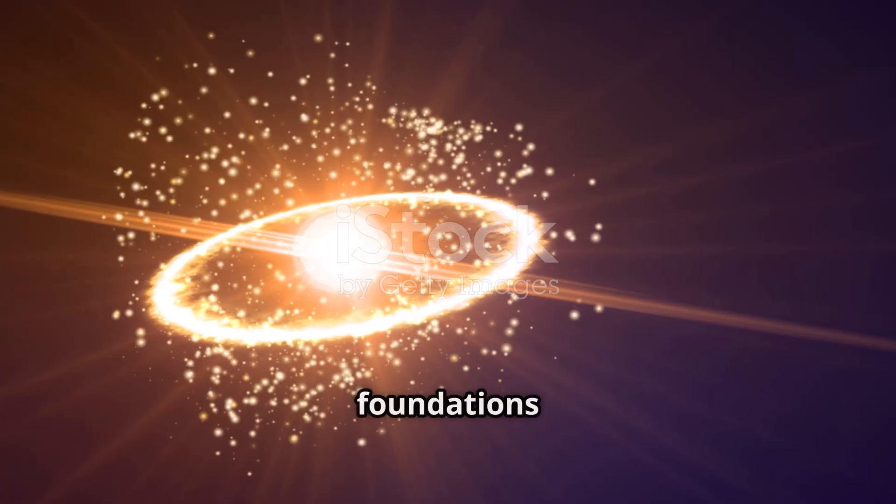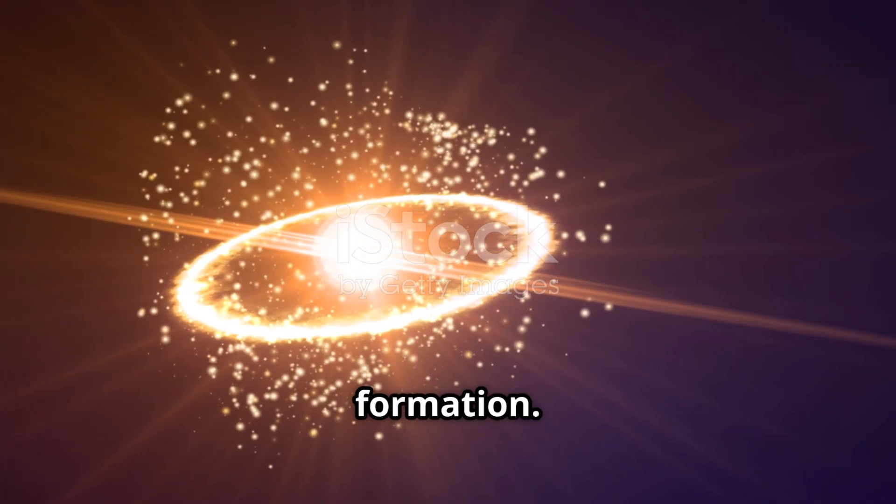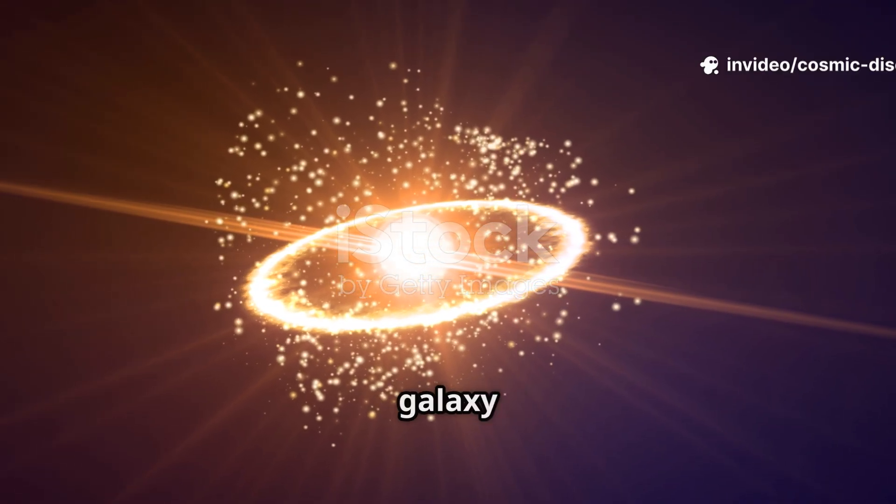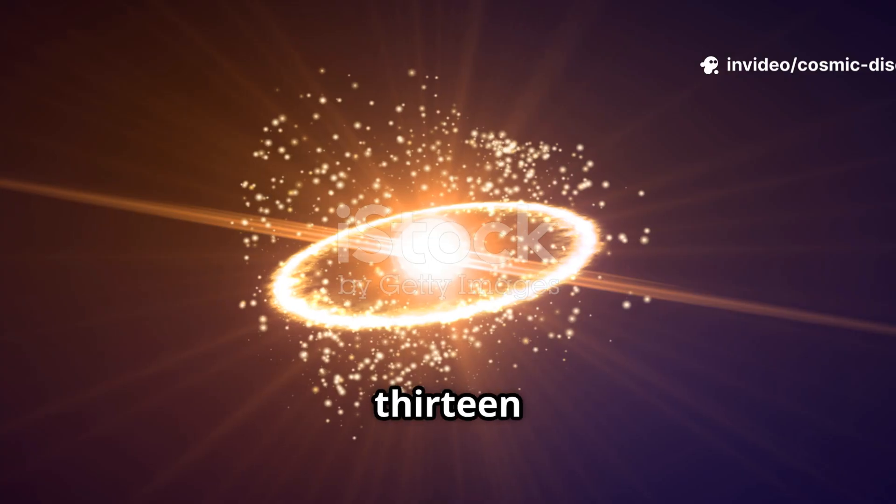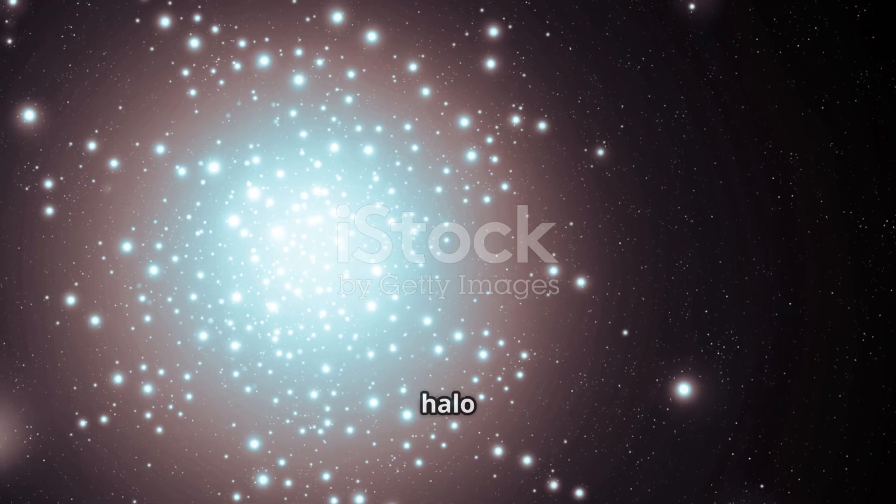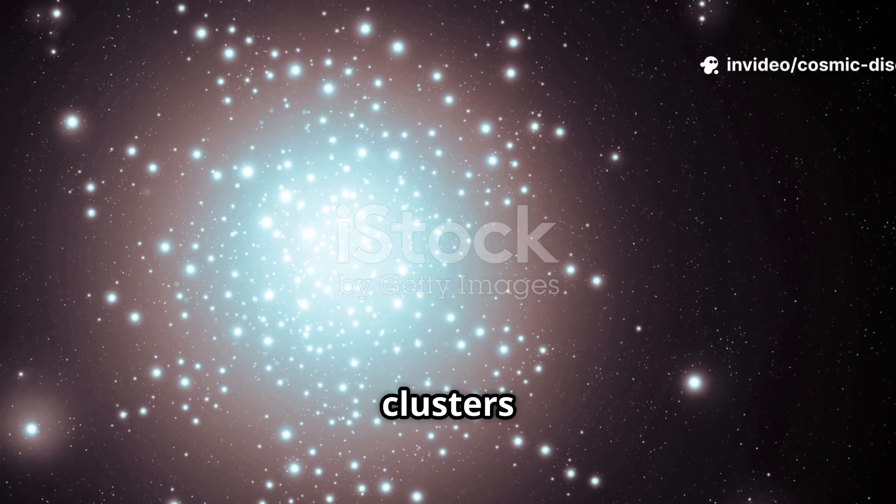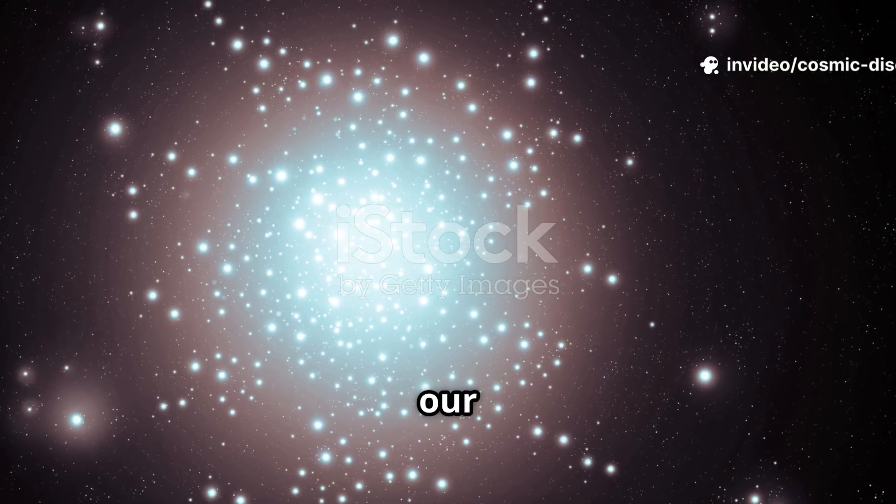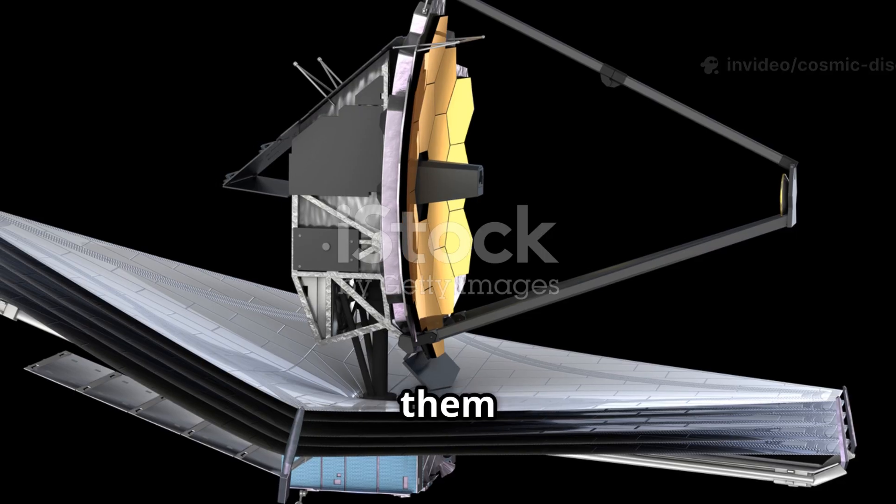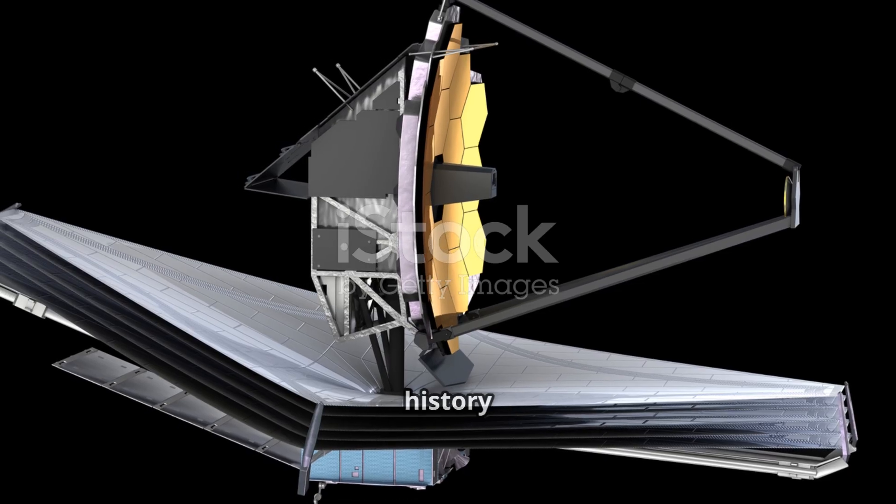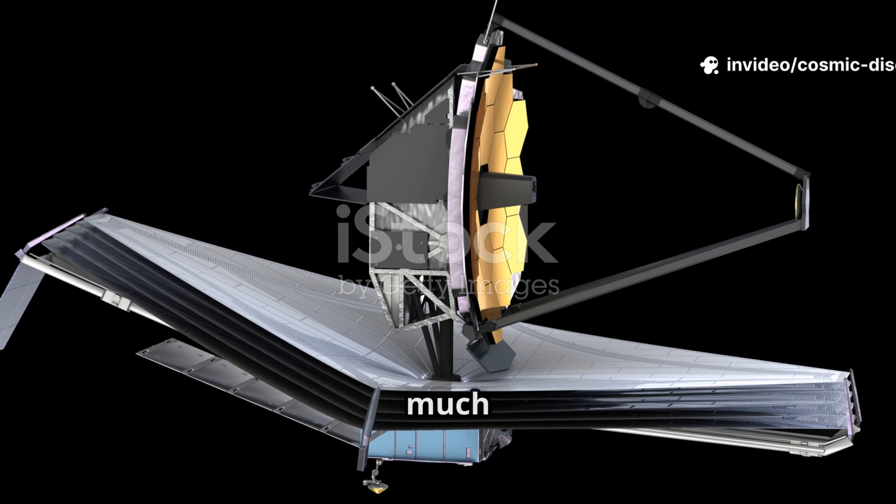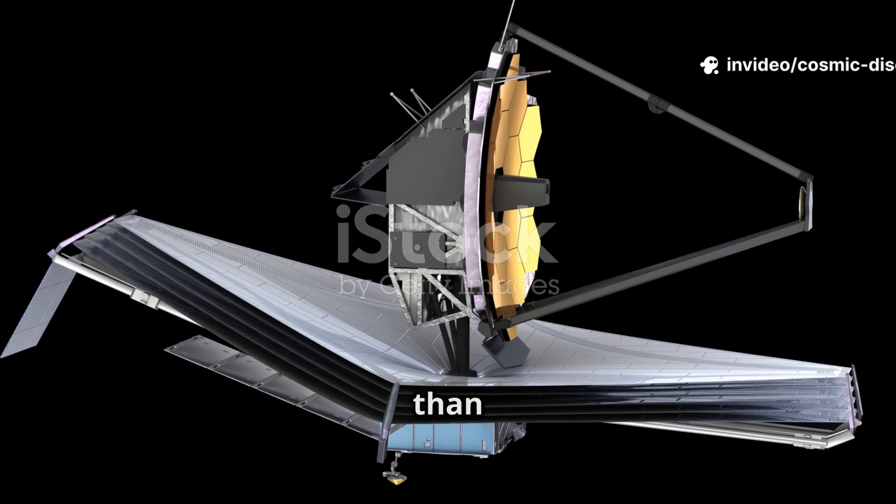These discoveries are challenging the very foundations of our theories of galaxy formation. One of the most notable of these early giants has been nicknamed the Sparkler. It is a galaxy seen as it was over 13 billion years ago. What makes it so remarkable is that it appears to be surrounded by a halo of what look like globular clusters, ancient, dense groupings of stars. On our own Milky Way, globular clusters are thought to be some of the oldest structures. Finding them around a galaxy so early in cosmic history is a puzzle. It suggests that the process of building up these large, complex systems started much earlier and happened much faster than we ever thought possible.